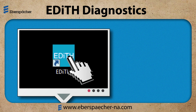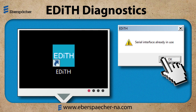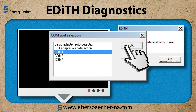If you receive a serial interface message, you need to make sure that you have the diagnostic plugged into the proper port, or map EDITH to the proper port. Once you click OK, the Comport selection window will open. Please contact us if you require additional help.